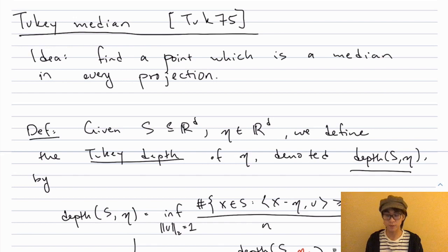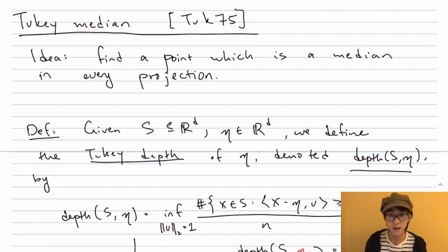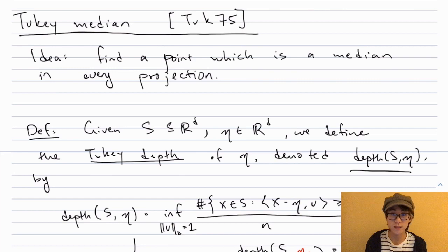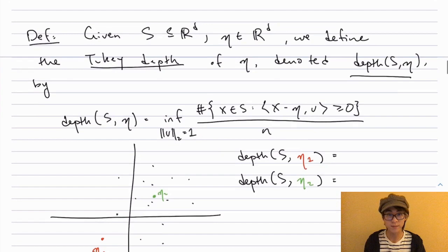Recall that in one dimension for the Gaussian learning problem, the median worked. However, the coordinate-wise median does not work. It turns out that the Tukey median is the right high-dimensional analog of the median for this problem, at least from the statistical point of view. The idea is, instead of just finding a point which is a median along the d coordinate bases, find a point which is a median along every univariate projection. This was introduced in a paper by Tukey back in 1975, a foundational paper in the field of robust statistics.